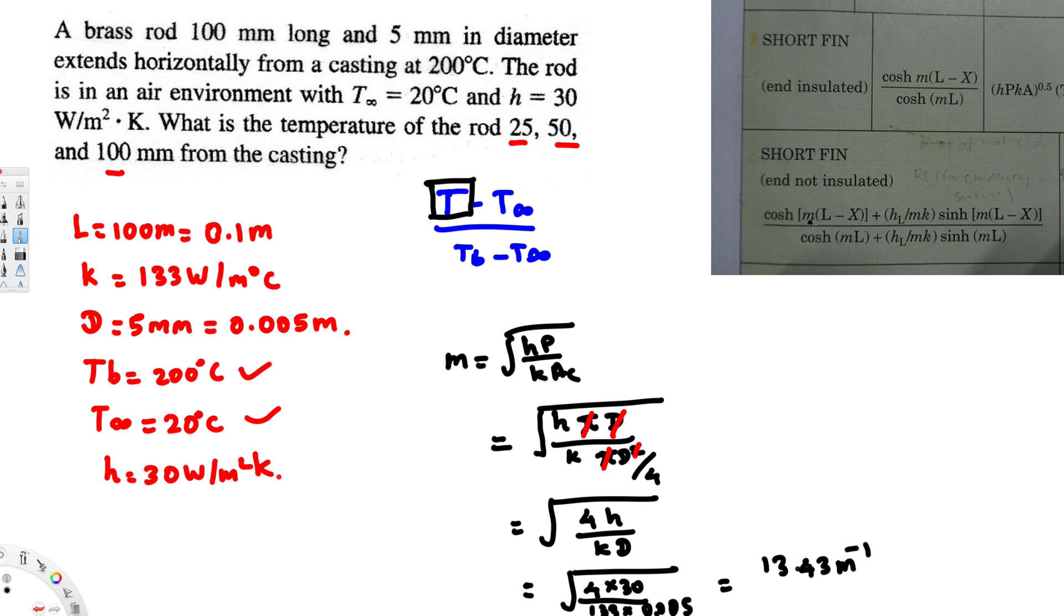hL over mk is going to be heat transfer coefficient 30 divided by the m value we calculated, 13.43, and then thermal conductivity of brass, 133. If you calculate this, you should get 0.0168.